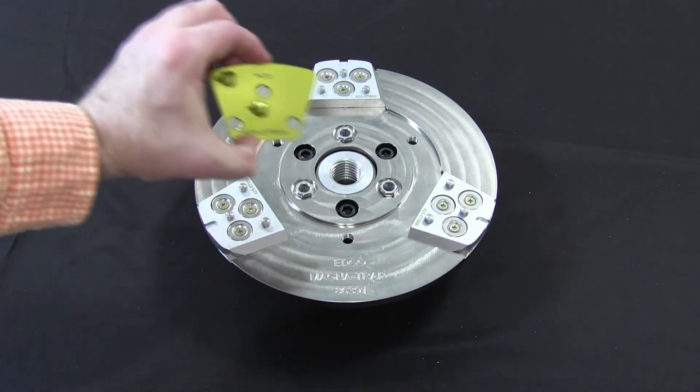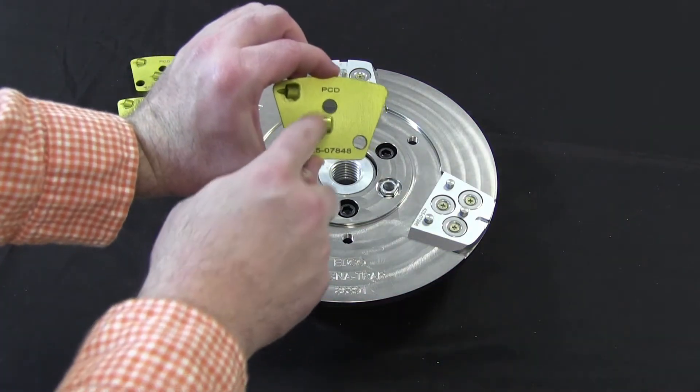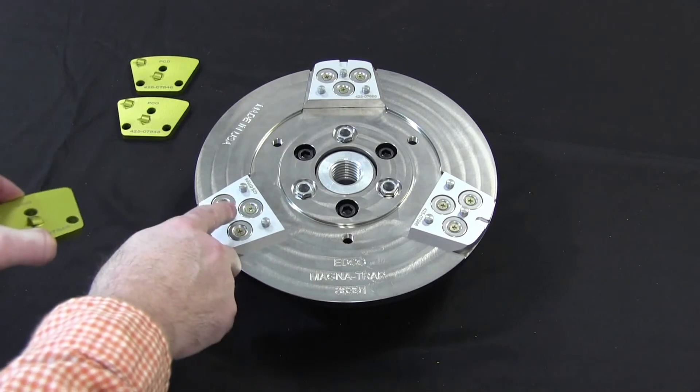Next, place the PCD on the adapter by aligning the three holes in the trapezoid to the three pins on the adapter.